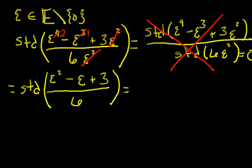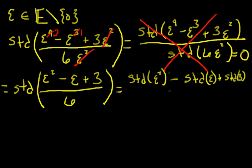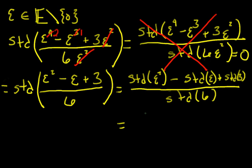This equals the standard part of epsilon squared minus the standard part of epsilon plus the standard part of 3, all divided by the standard part of 6. The standard part of epsilon squared is 0 since epsilon squared is an infinitesimal. The standard part of epsilon is 0. The standard part of 3 is 3, and the standard part of 6 is 6. So the standard part of this hyperreal is simply one-half. We'll do a few more exercises in the next video.